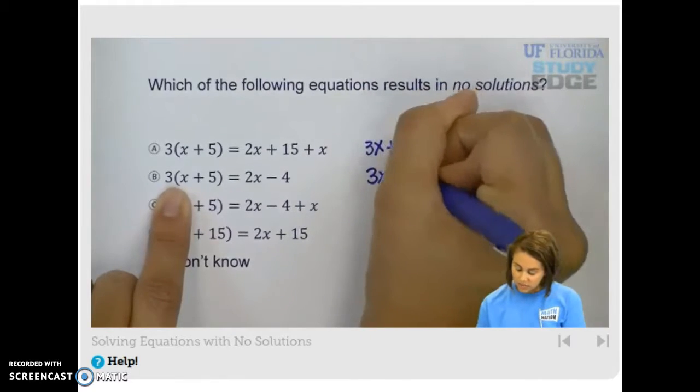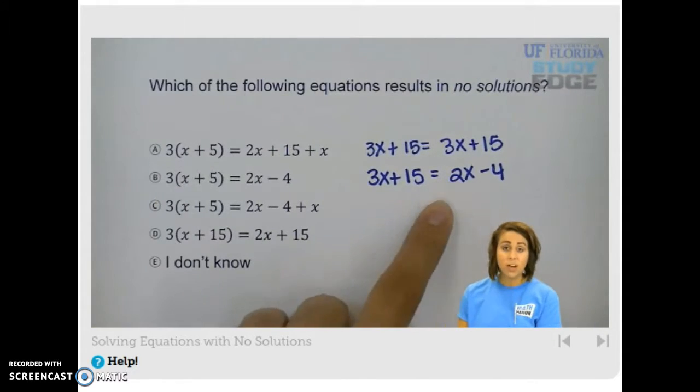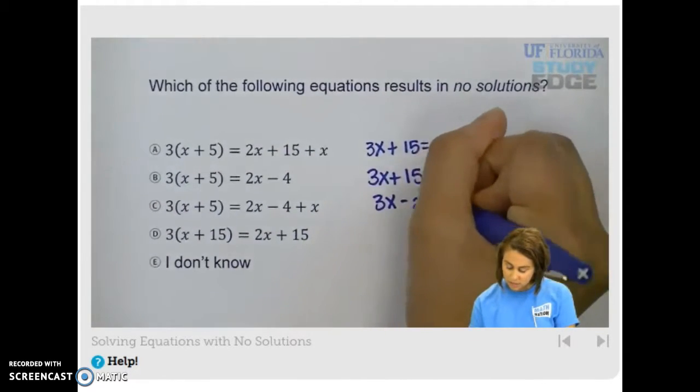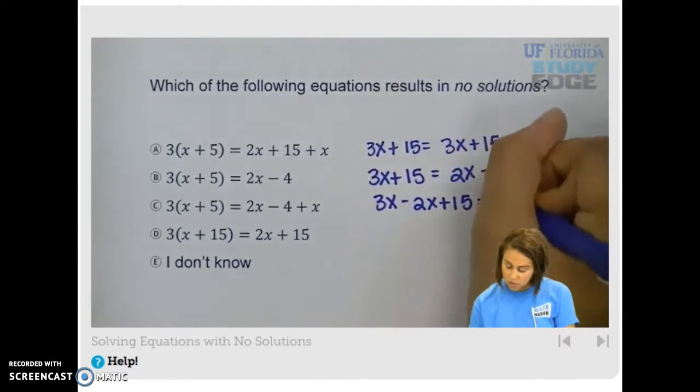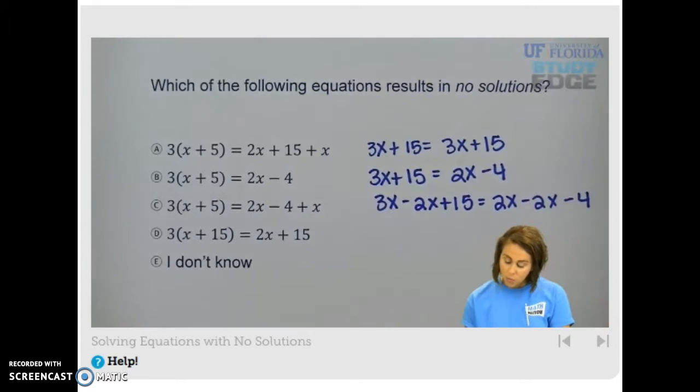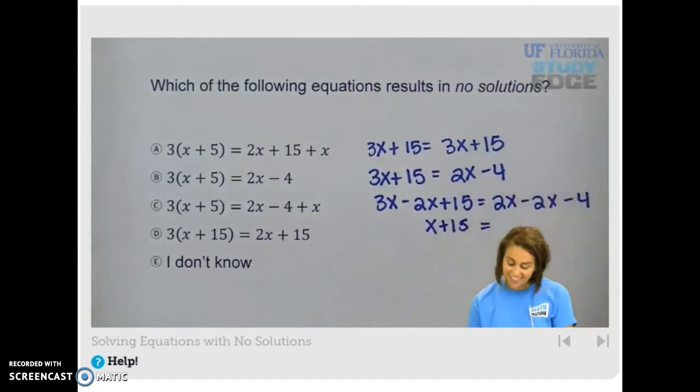we have 3x plus 15 equals 2x minus 4. We want to subtract 2x from both sides, right? So we have 3x minus 2x plus 15 equals 2x minus 2x minus 4, which leaves us with x plus 15 on the left hand side, and negative 4 on the right.